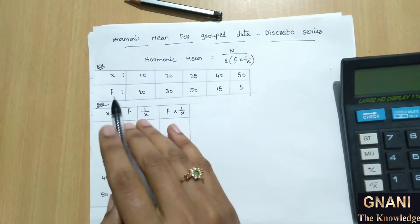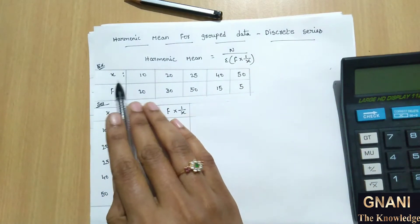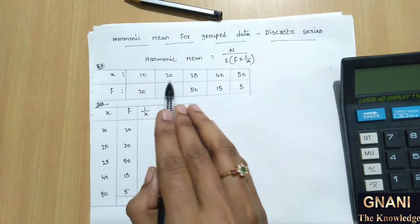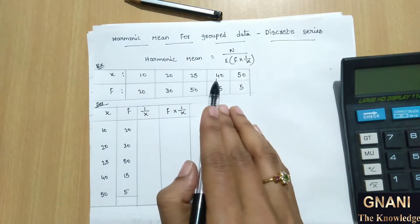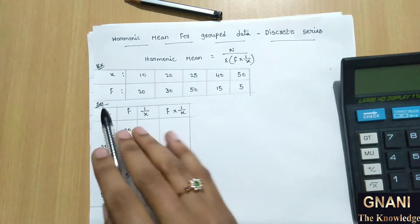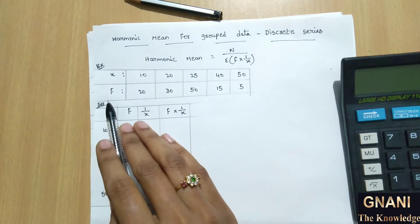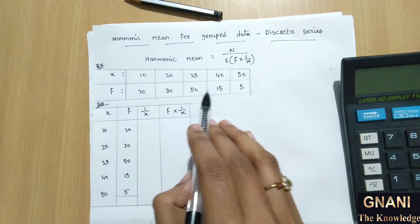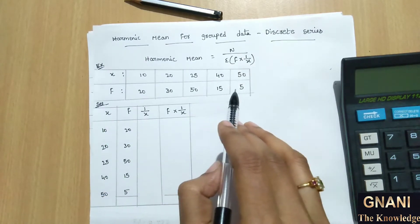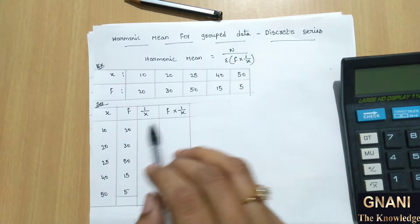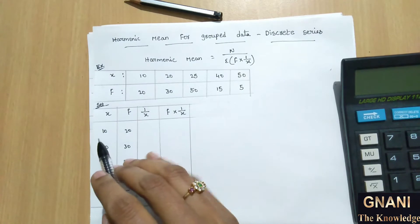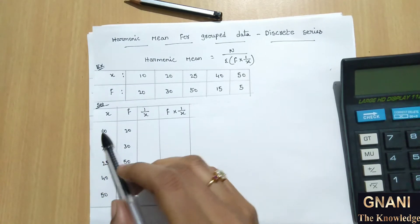The example problem: x values are 10, 20, 25, 40, and 50. And the frequency values are 20, 30, 50, 15, and 5. Next, go to the solution.